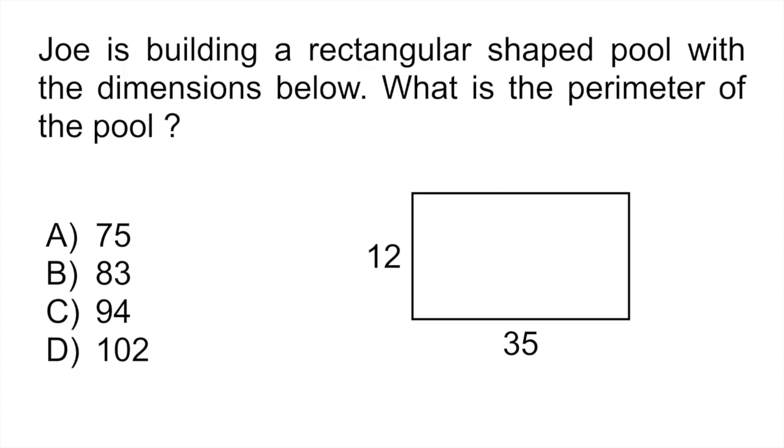The question is saying that Joe is building a rectangular shaped pool with the dimensions shown below. What is the perimeter of the pool? So if you look at the dimensions, they're giving you the length, which is 35 feet, and the width, which is 12 feet. And then they're asking you the perimeter. So the perimeter is the distance around the pool. If you were to walk around the perimeter, it means that you were walking along the whole distance of the pool.